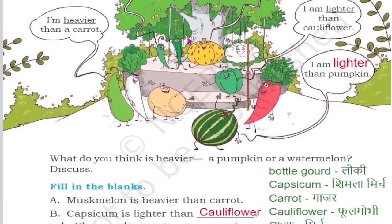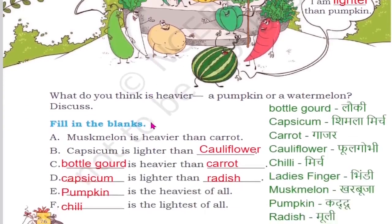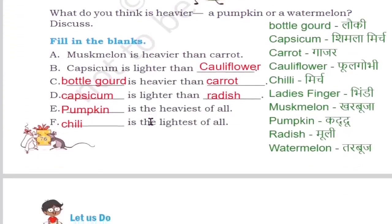So children, we have compared the vegetables - which is heavier and which is lighter. You can see all the vegetables and arrange them. Which vegetable is the heaviest and which is the lightest? Apply what you have learned. See you next time.